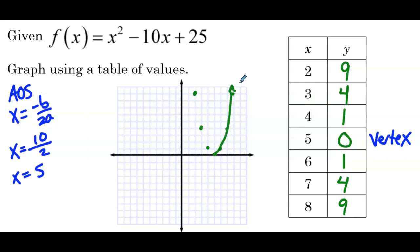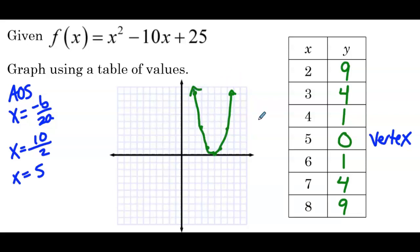We'll connect our points to get the parabolic curve. Notice: discriminant of 0 means we only have one x-intercept. And when we have one x-intercept, that point is also the vertex of the curve.